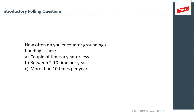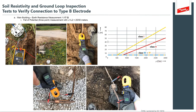A question for the audience: how often are you encountering grounding or bonding issues? A couple of times a year or less? Between two to ten times per year? More than ten times per year? Down here in Fort Pierce, Florida, we get a lot of lightning, so we see grounding and bonding issues more often because lightning will provoke problems if you have poor bonding and grounding.